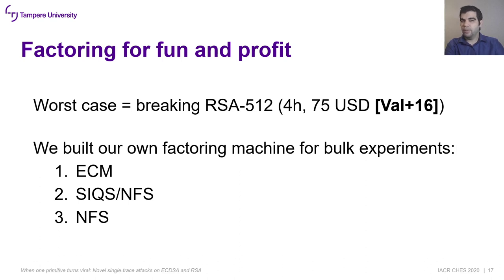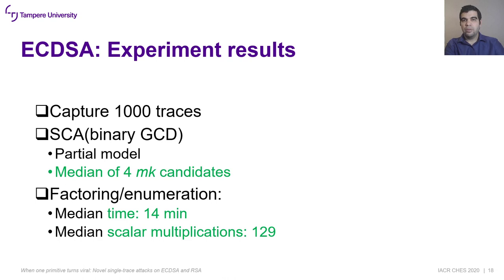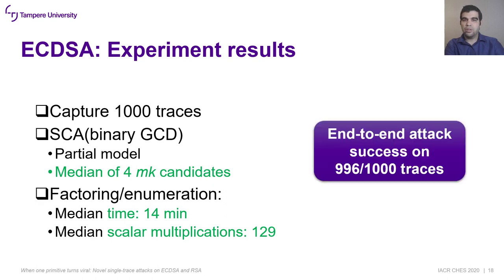For extensive experiments, we built our own factoring machine — details about the algorithm and configuration are in the manuscript. We captured 1,000 traces and extracted the control flow information of each binary GCD instance. The median number of M·K candidates per trace was 4, the median factorization time was only 14 minutes, and the median number of scalar multiplications needed for testing solution candidates was 129. The attack runtime is therefore small. The success rate was 99%, demonstrating the attack's effectiveness.